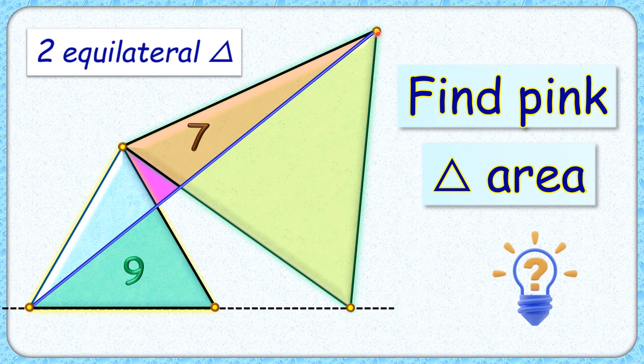Now we have joined the two vertices of the equilateral triangles which are far away by this blue straight line. The area of the green triangle is 9 square centimeters, and the area of this orange triangle is 7 square centimeters. Now the exciting part is, with this limited data, we have to find the area of this pink triangle.